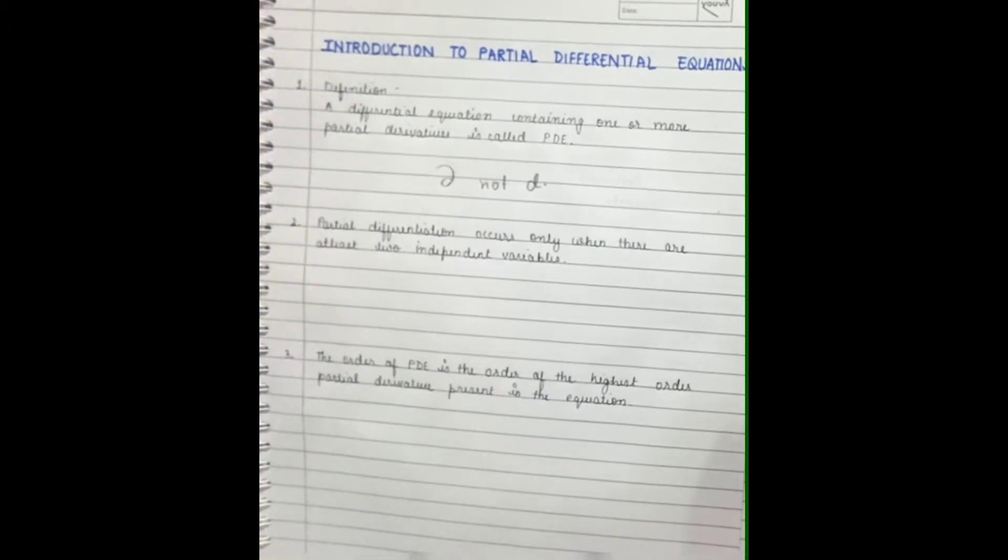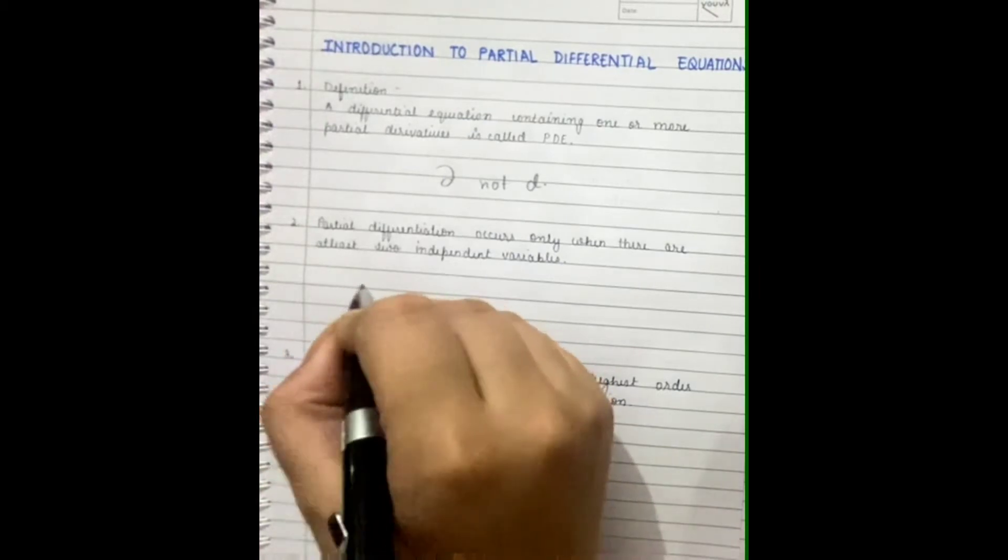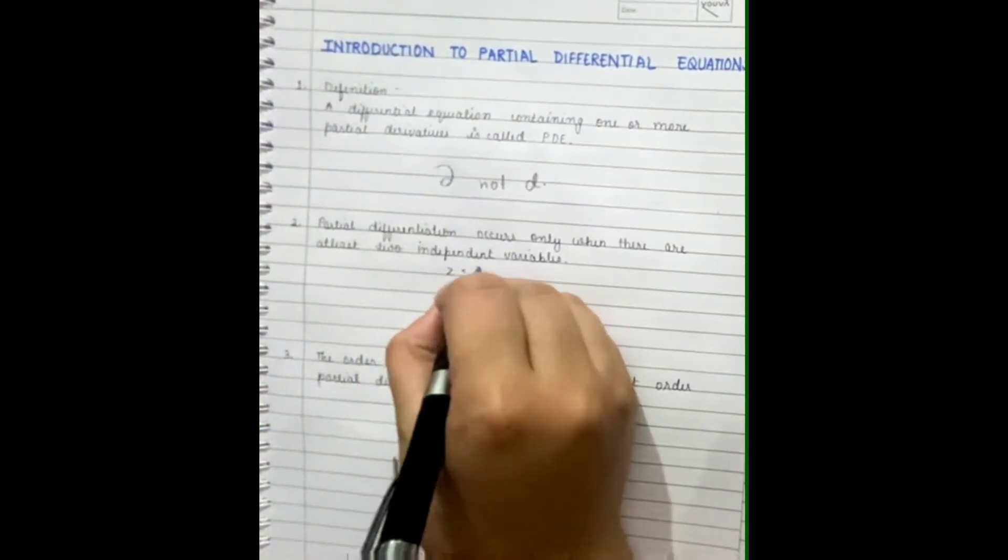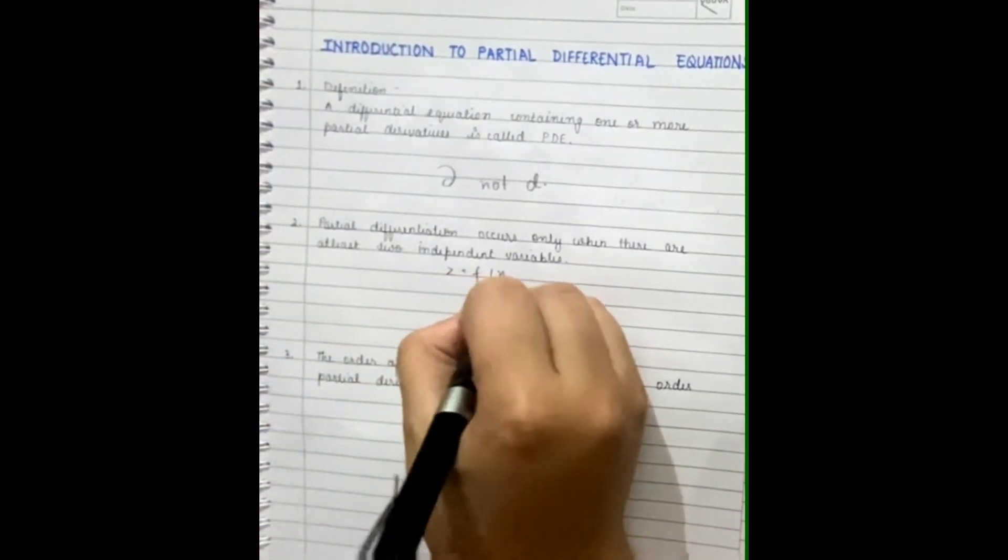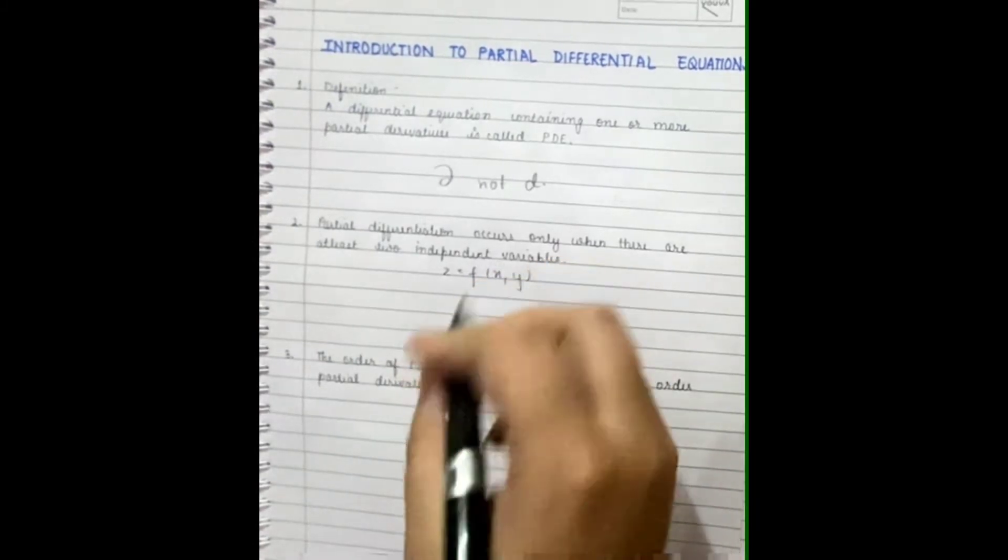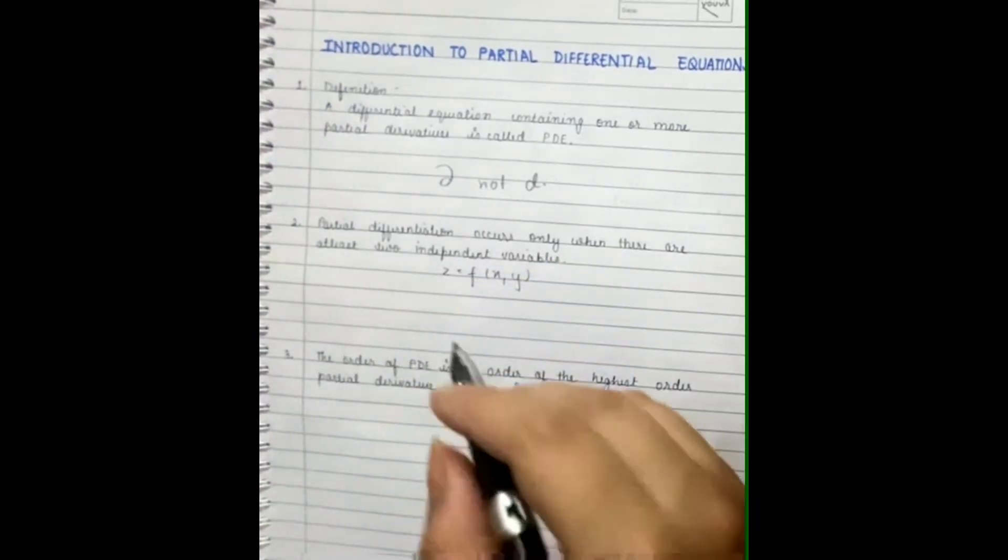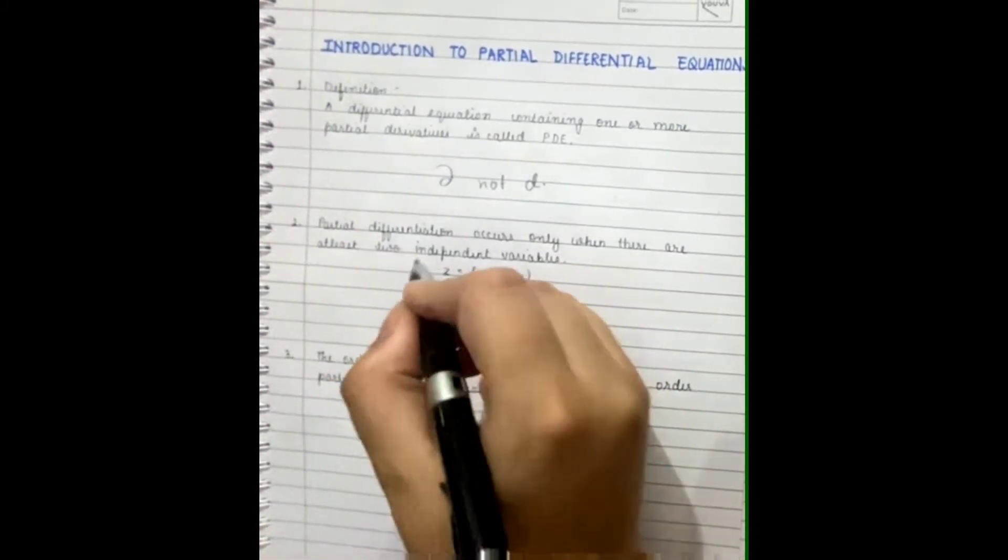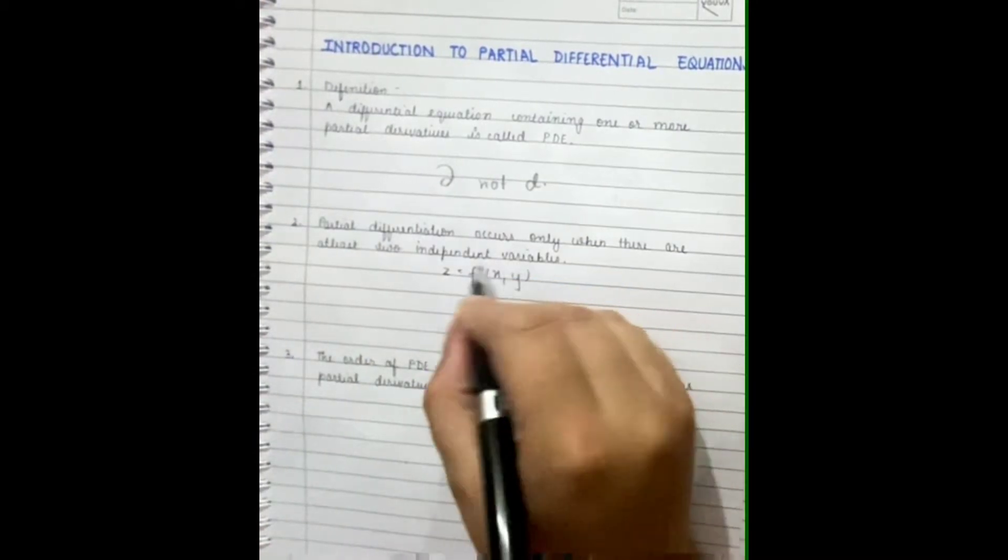Let's understand this with an example. Z is a function dependent on X and Y, and here X and Y are independent variables. Z is dependent on them because if X and Y change, then Z's value will also vary.